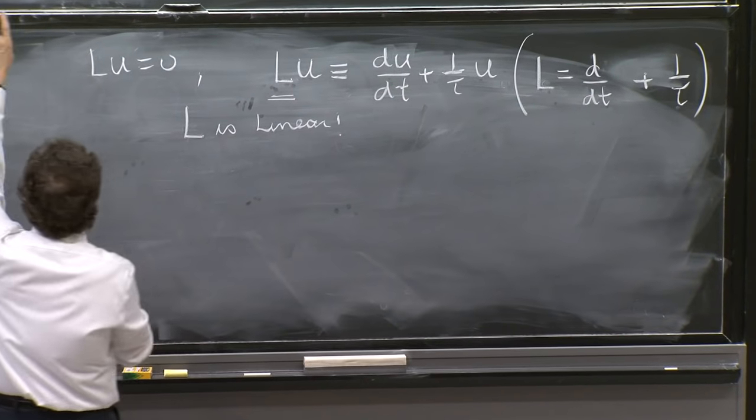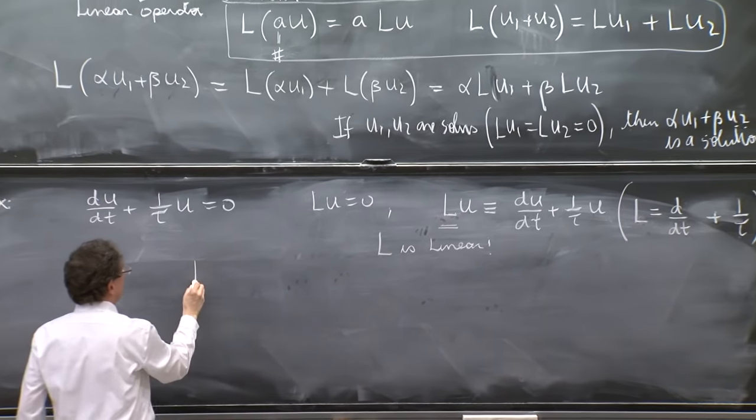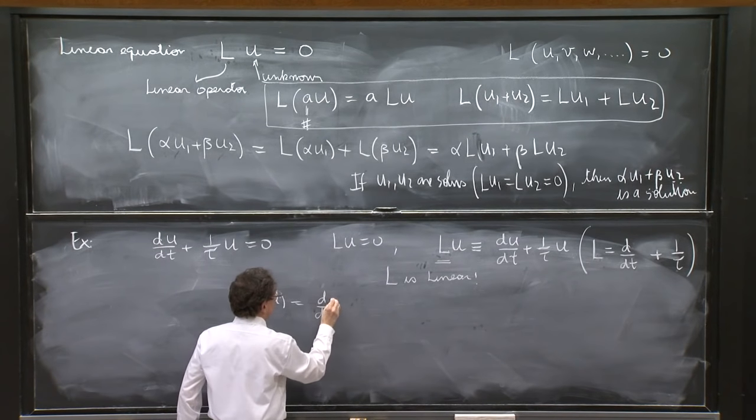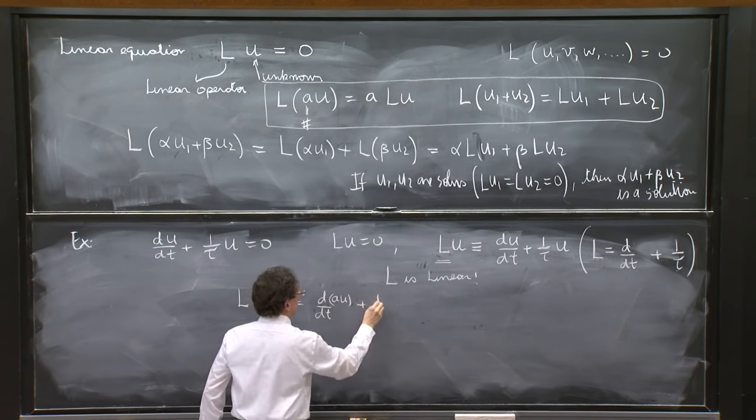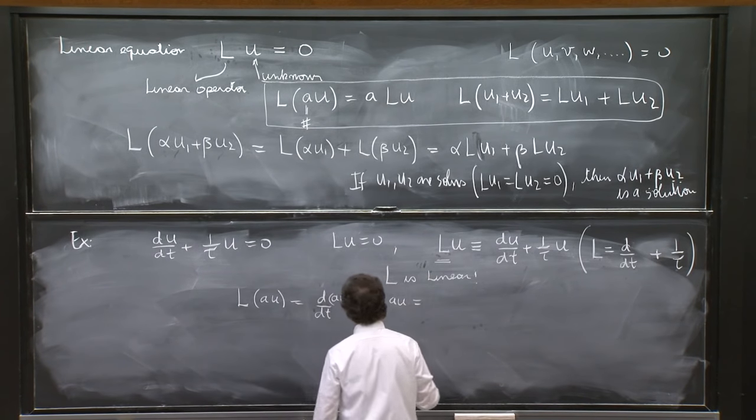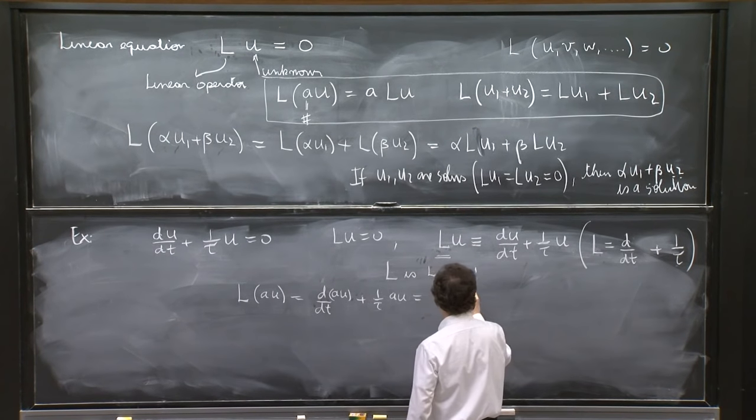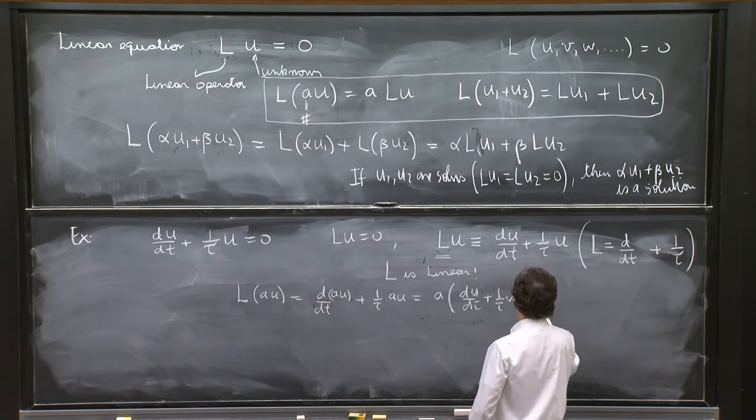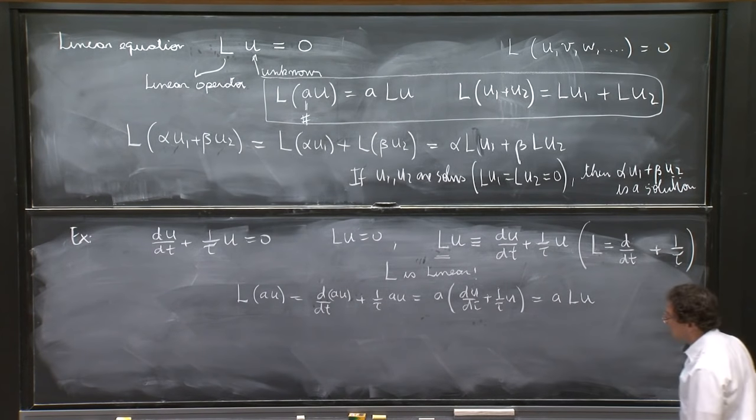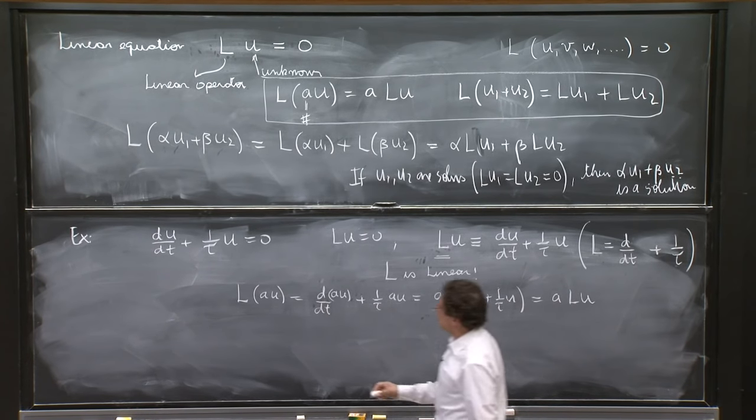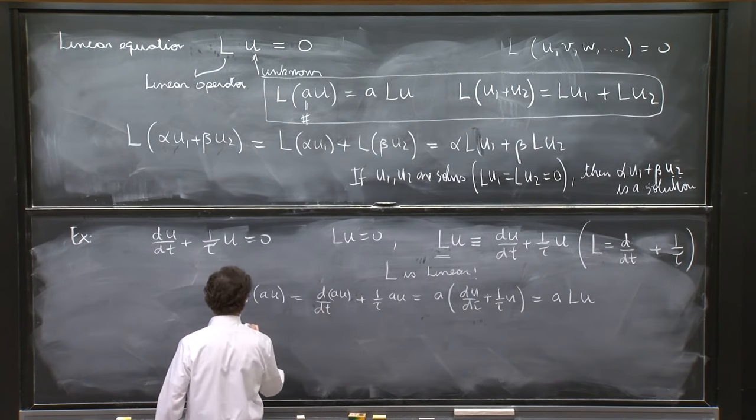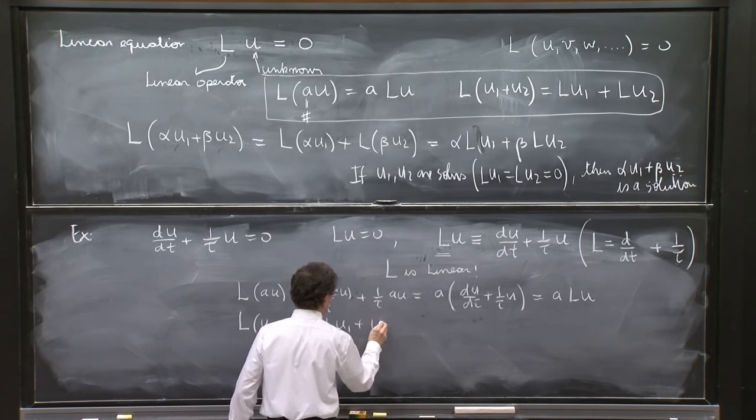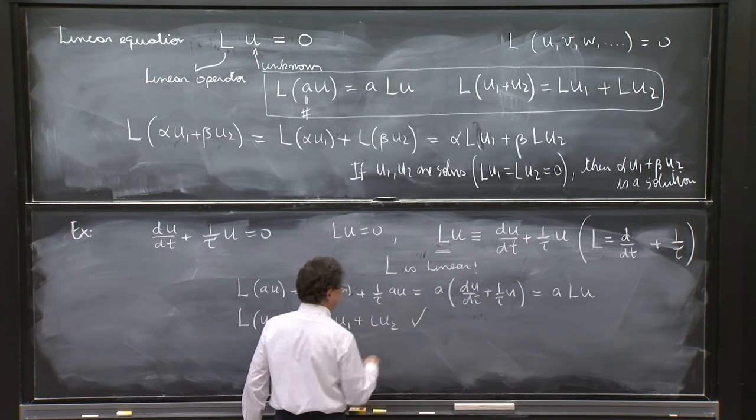And now it is straightforward to check that this is a linear operator. L is linear. For that, you have to check the two properties. For example, L on au would be d/dt of au plus (1/τ)au, which is a Lu. And you can check, I ask you to check the other property: L on u1 plus u2 equals Lu1 plus Lu2.